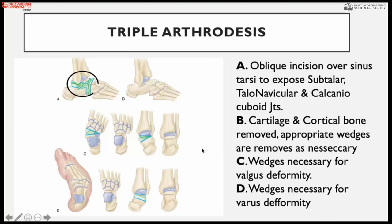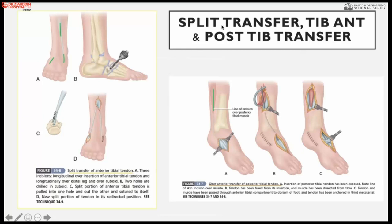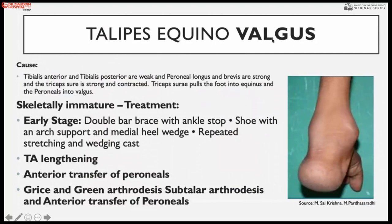For split transfer of tibialis anterior, the tendon is divided into two parts; half is shifted to the lateral cuneiform or cuboid bone and reattached. For posterior tibial transfer, the tibialis posterior is released from its insertion and re-routed over the fascia to the dorsum; the tibialis posterior is transferred to the middle part of the dorsum. For fixed deformity, triple arthrodesis is performed. Talipes equinovalgus — equinus with valgus — is mostly caused by weak tibialis anterior and tibialis posterior with strong peronei and contracted triceps surae producing valgus deformity.